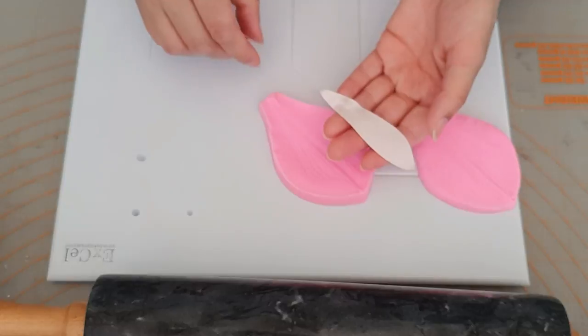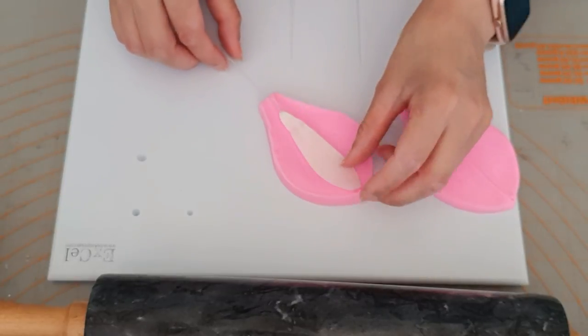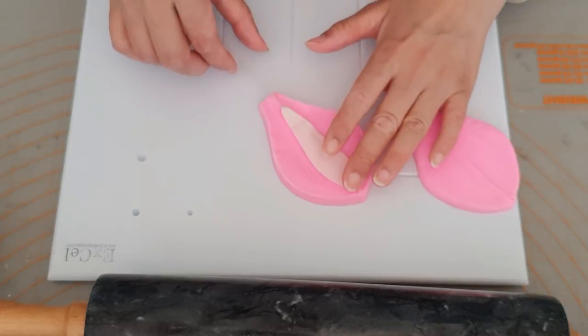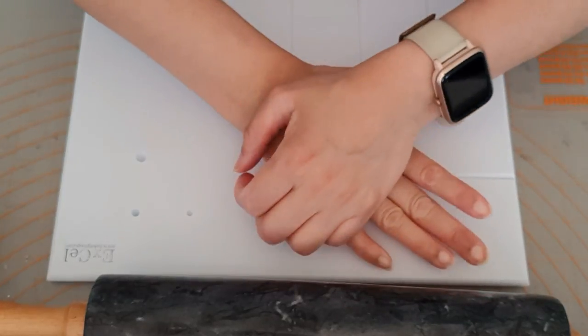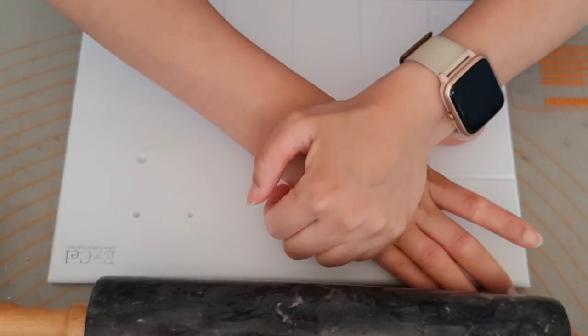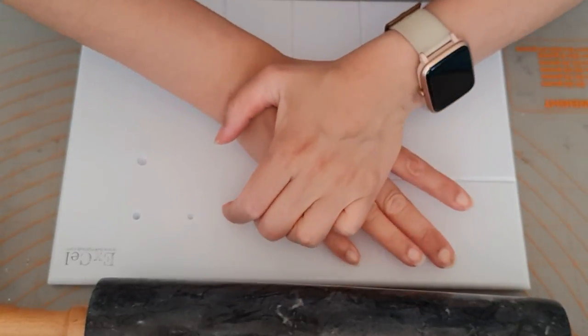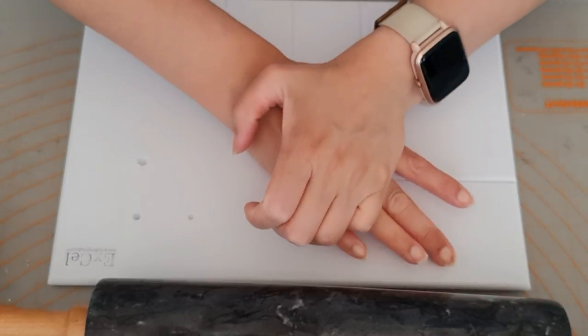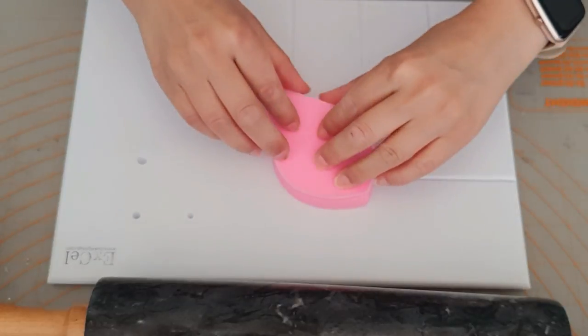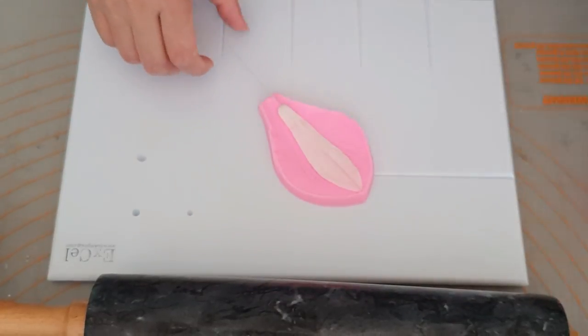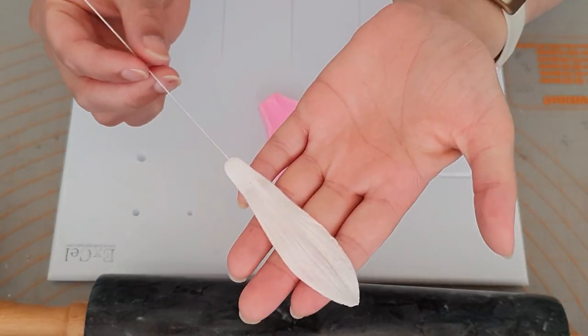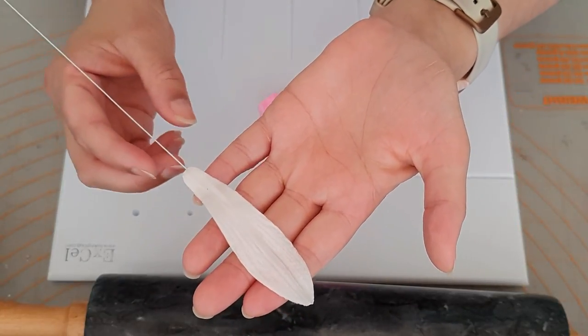And then just give it a bit of a pinch. And then with the veiners, groove side facing down and in the middle. And then just press really, really nice and firmly so you get that maximum texture onto the petals. And that's what the texture looks like. It's really nice and lovely.